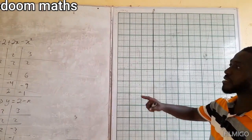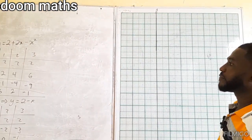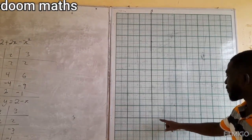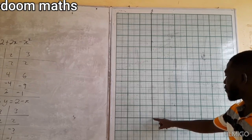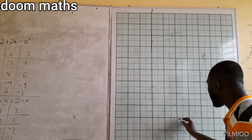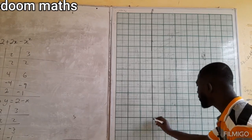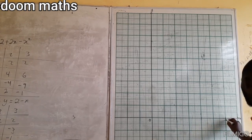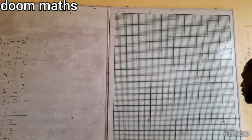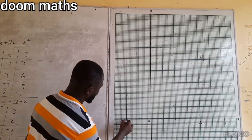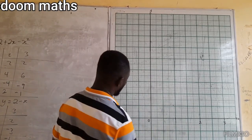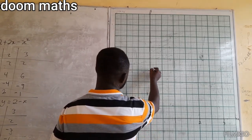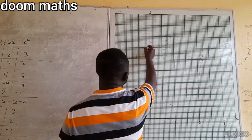The scale is 4 centimeters to 1 unit, meaning from here to here is 2 centimeters for half a unit. On the x axis we mark 1, then 0, then 2, then 3. On the y axis this is negative 1, then 1, 2, and 3.